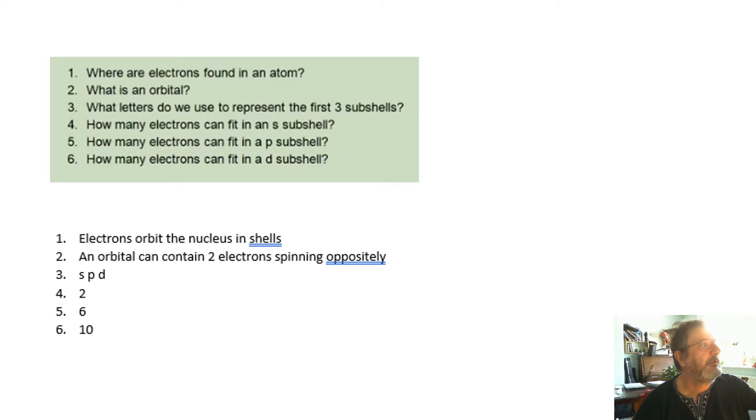The subshells are S, P, D. The next one is F. How many electrons in an S is two, because it's one orbital. A P has got three orbitals, so that's six. And a D has got five orbitals, so that is 10.